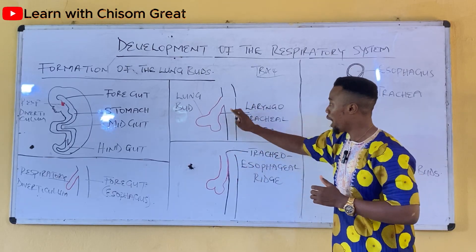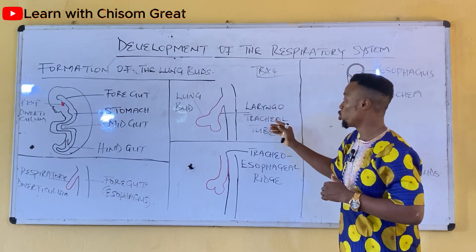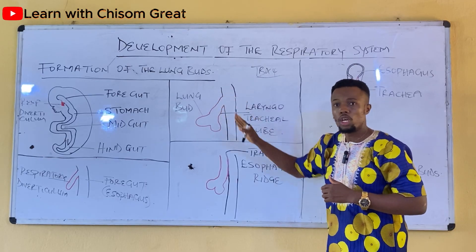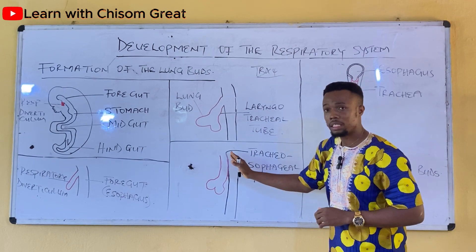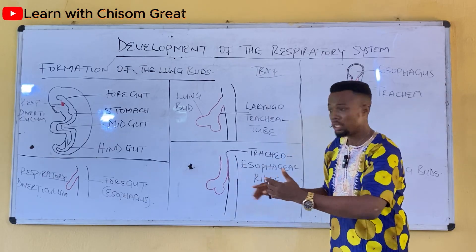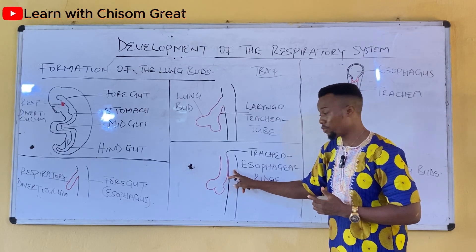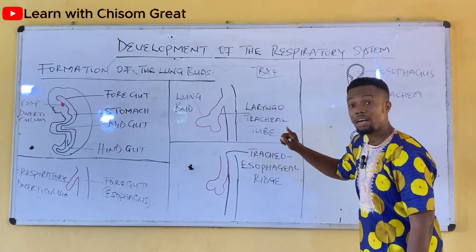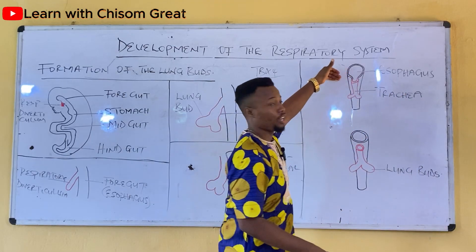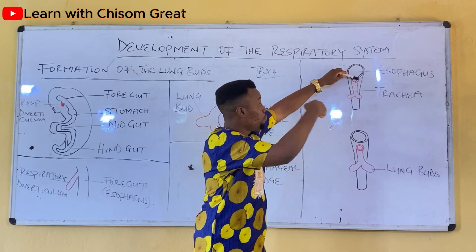At the initial stage, the laryngotracheal tube is in open communication with the developing esophagus. But then there is an appearance of the tracheoesophageal ridge. This tracheoesophageal ridge appears in between the laryngotracheal tube and the developing esophagus. You can notice the tracheoesophageal ridge appearing between these two communicating structures.